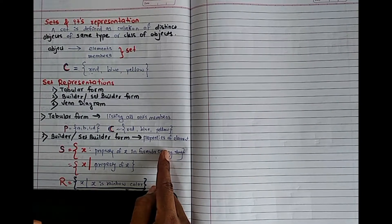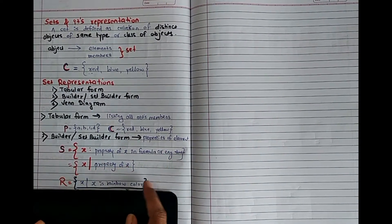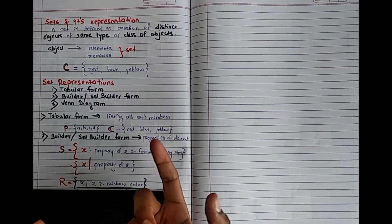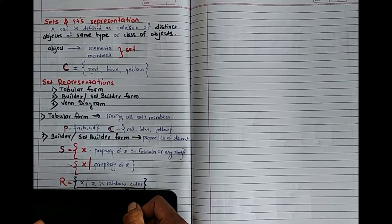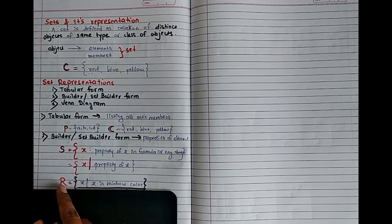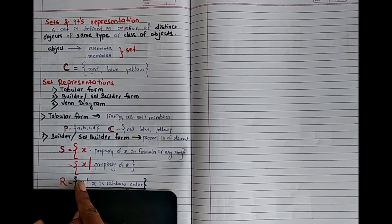Or in this way, like for example, if I have to say that all the colors, we have to write. So if I have to write it, what will I do? I will write the formula or I will write the English statement. What is x, element of my set?